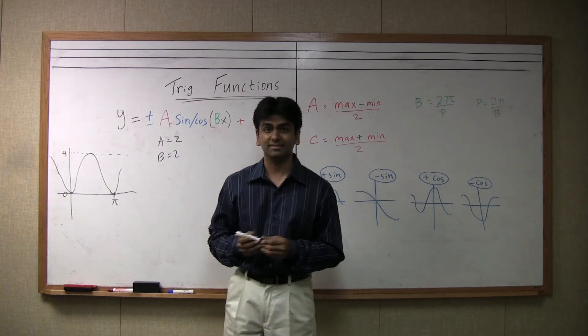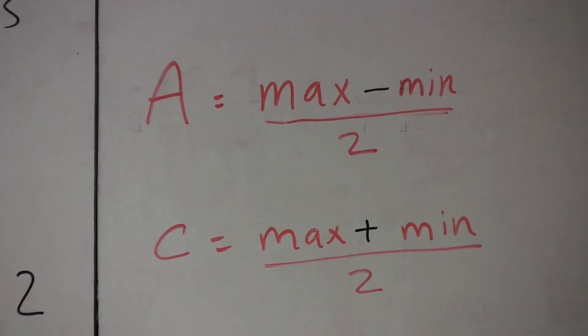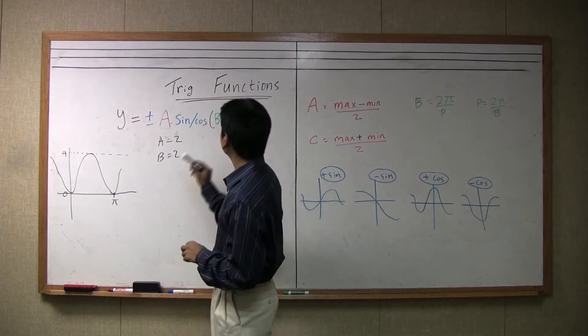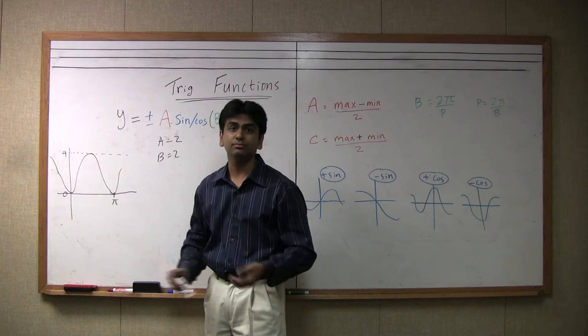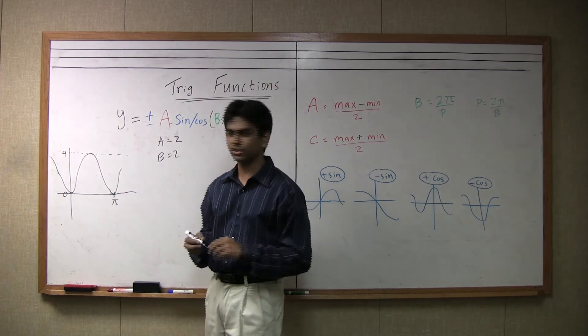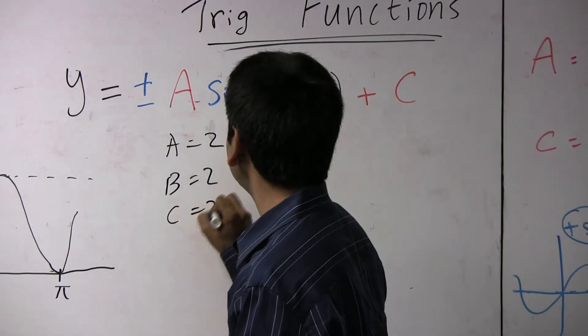Finally, let's look at what c is. c notice is very similar to a, so don't confuse those. c is max plus min divided by two, which here will be four plus zero divided by two, which is again two. So a, b, and c are all two.